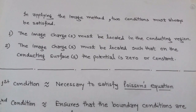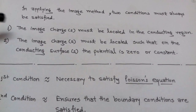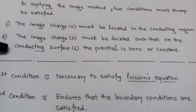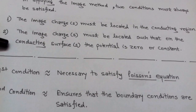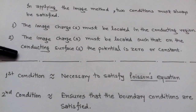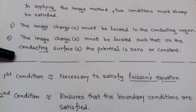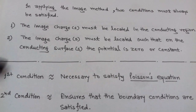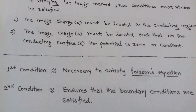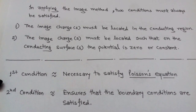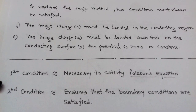While applying the method of images, two conditions must always be satisfied. The first condition is that the image charge or charges must be located in the conducting region. The second condition is that the image charges must be located such that on the conducting surface the potential is 0 or constant. The first condition satisfies Poisson's equation, while the second ensures all boundary conditions are satisfied.